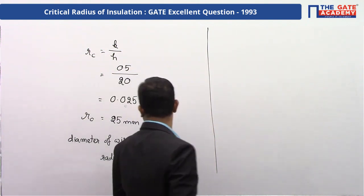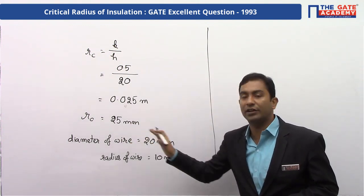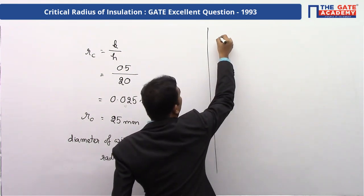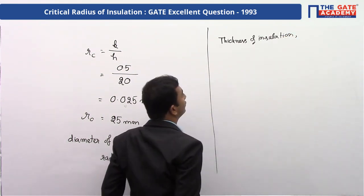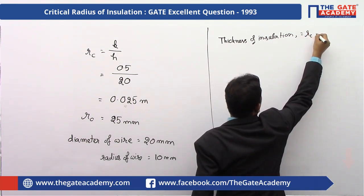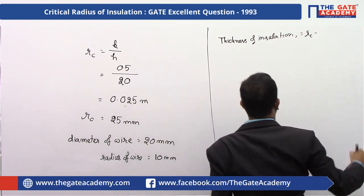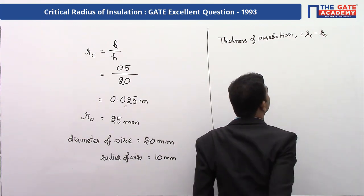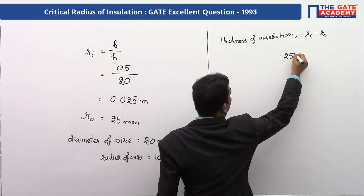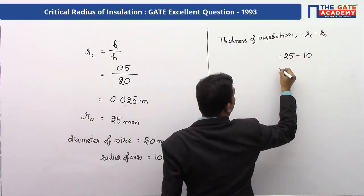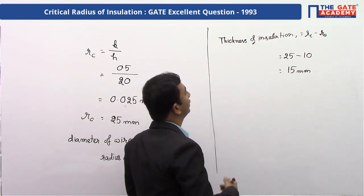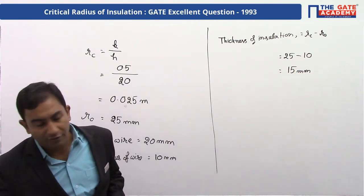What will be the thickness of insulation? The critical radius is 25 mm. The thickness of insulation will equal RC minus radius of the wire. I will write it RW. So RC minus RW will have 25 minus 10. This will be equal to 15 mm. The thickness of insulation is 15 mm.